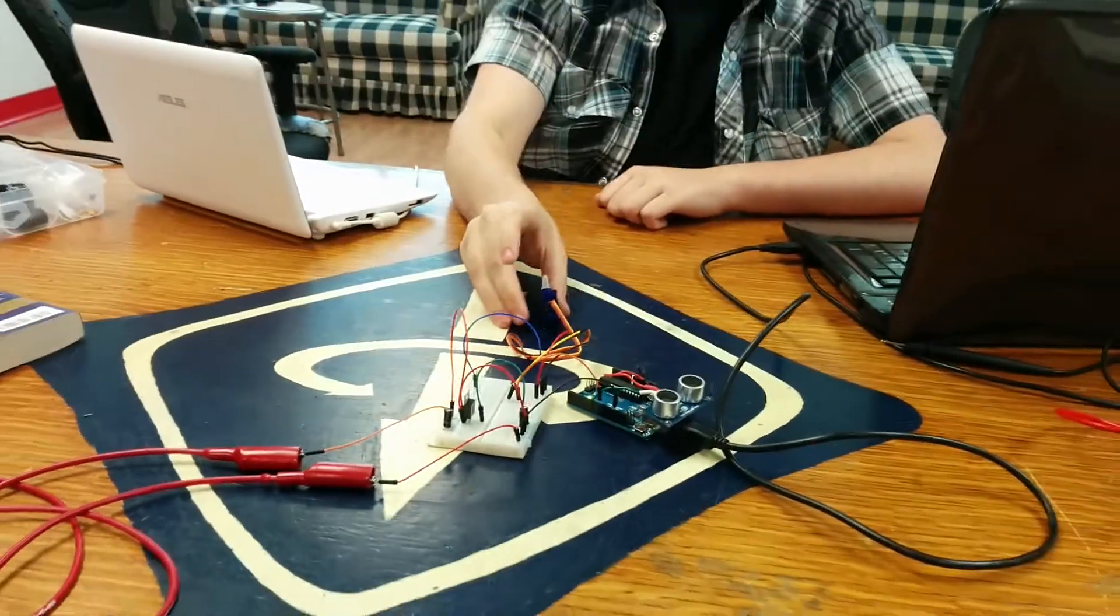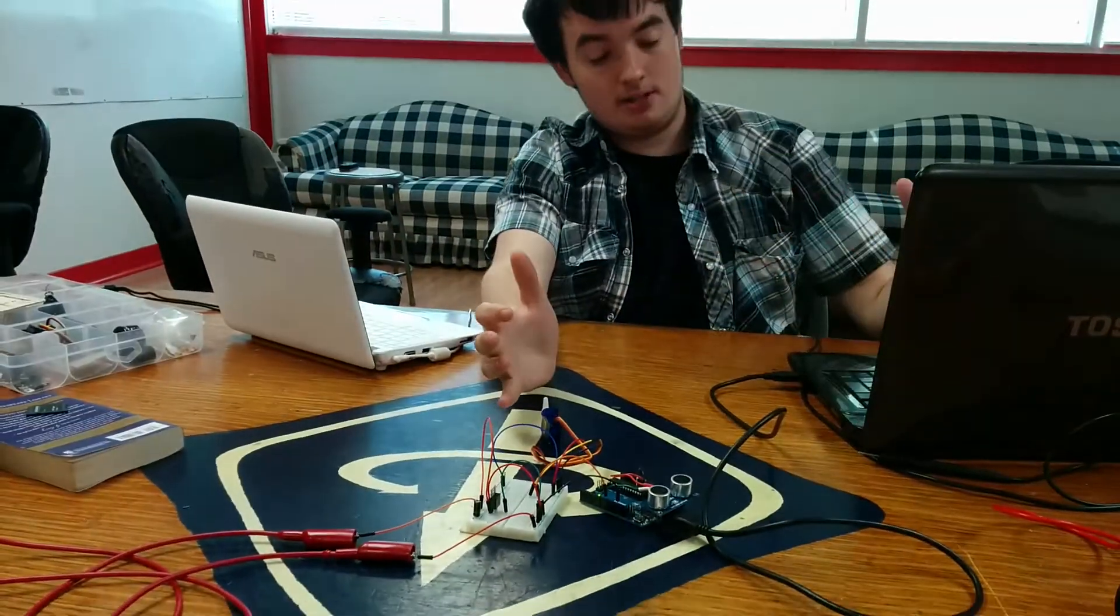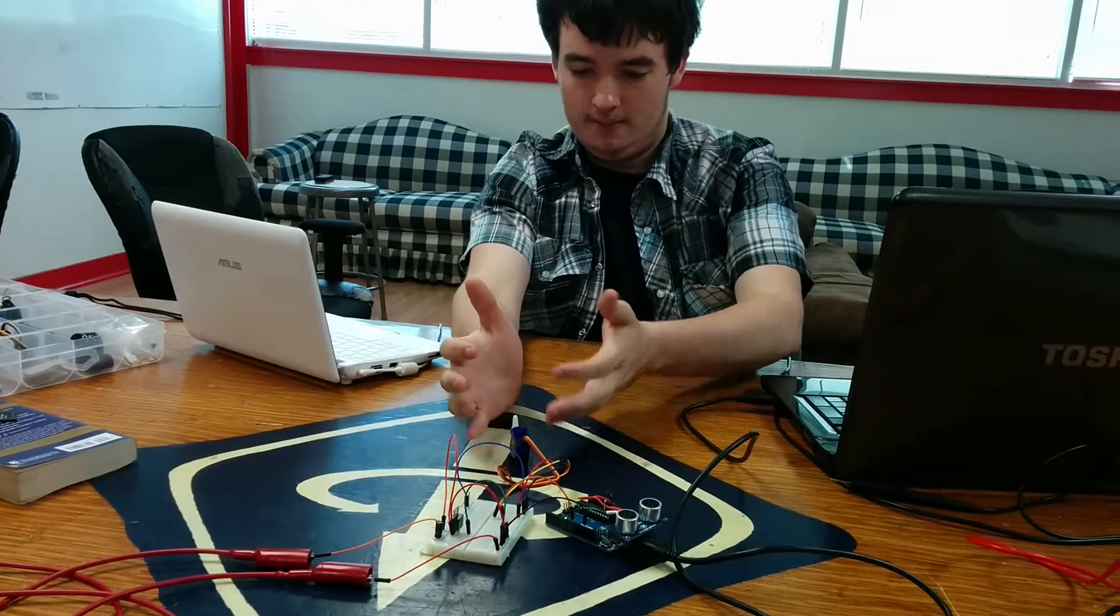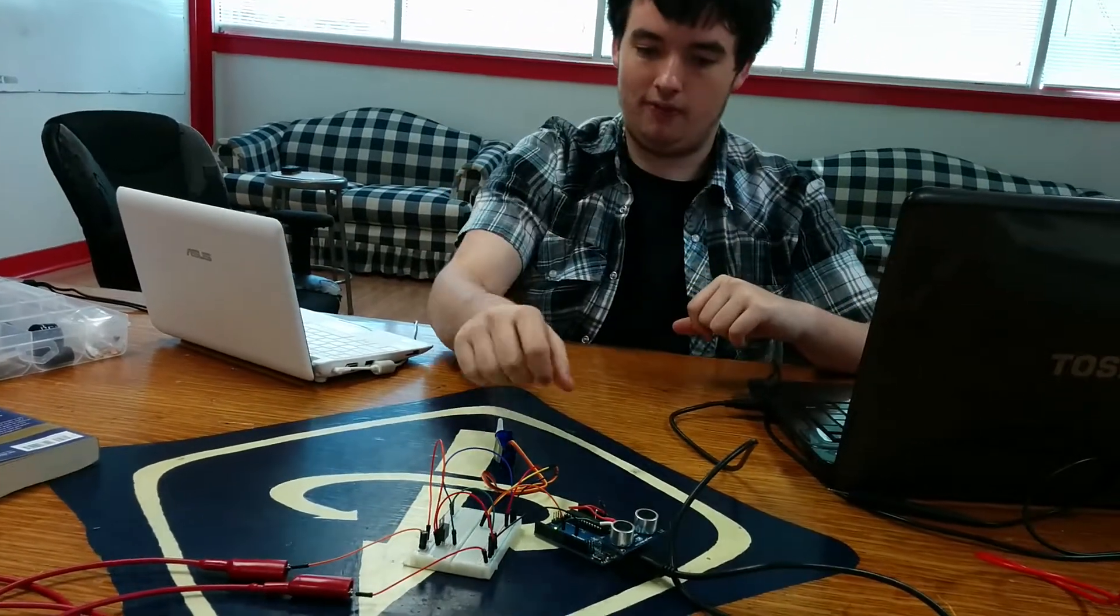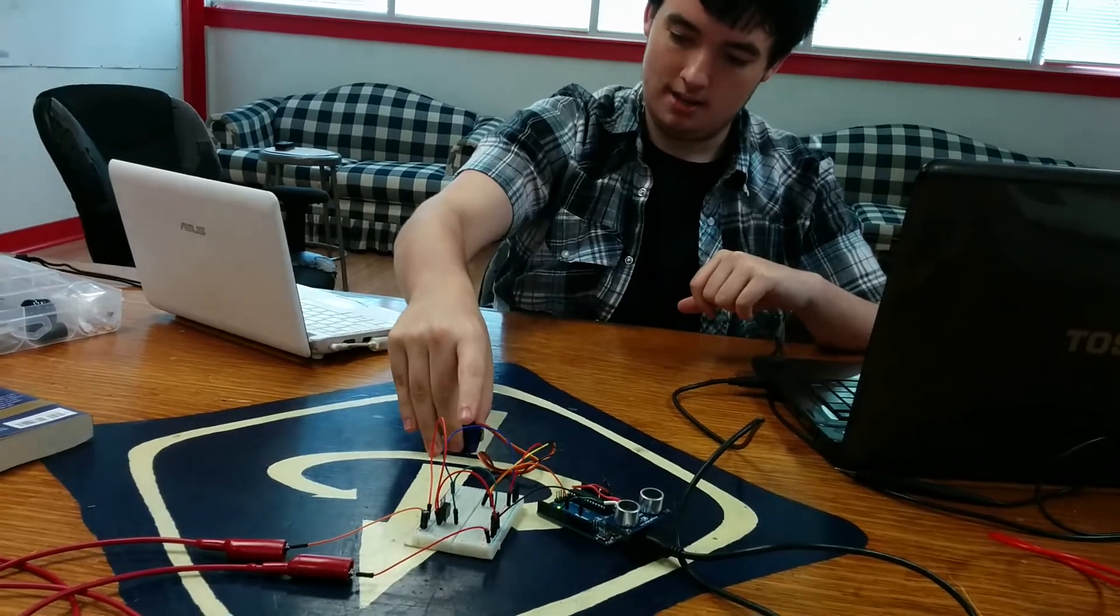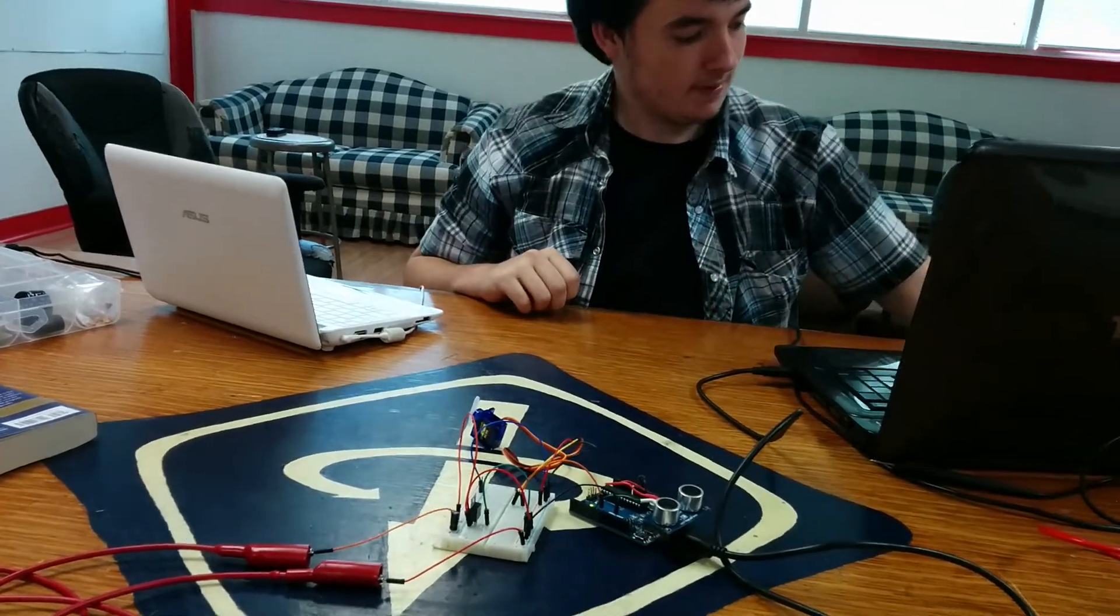So now if I turn on this code that I have hooked up to it, when I put my hand at certain distances from the sensor, the motor will move.